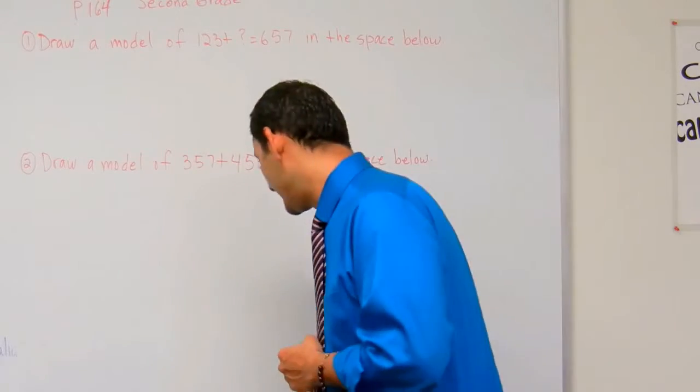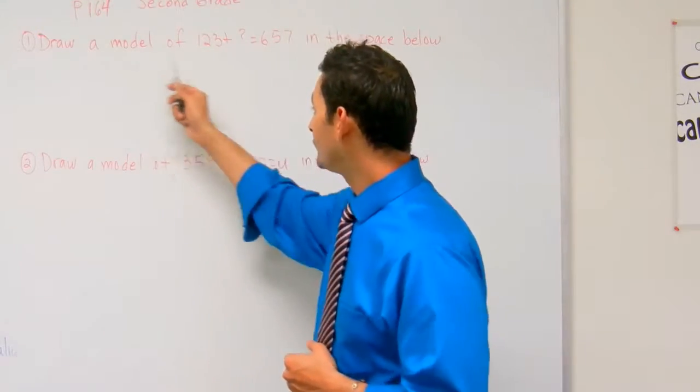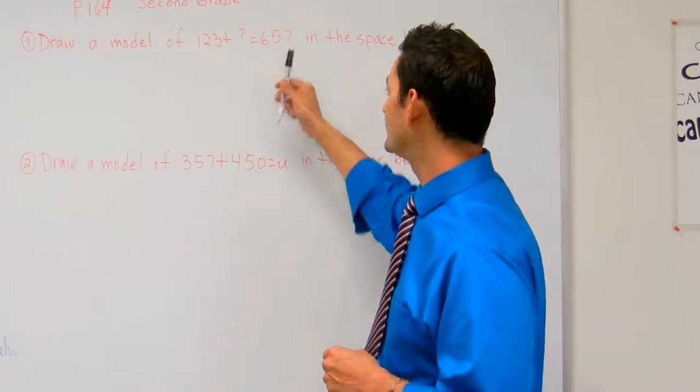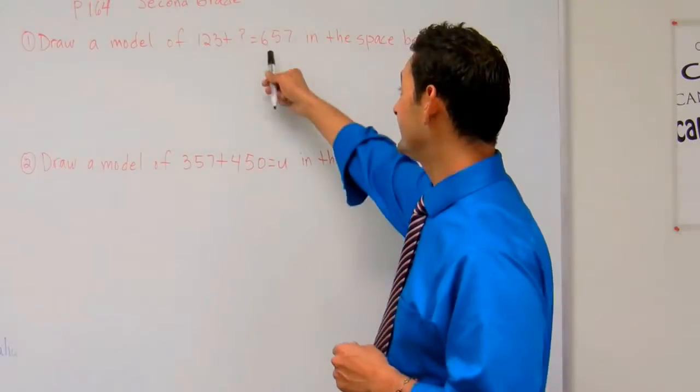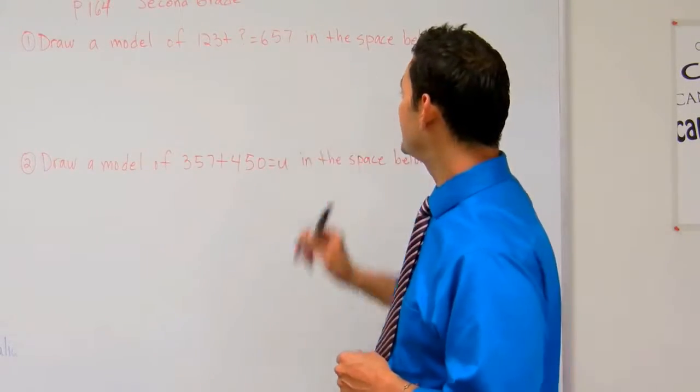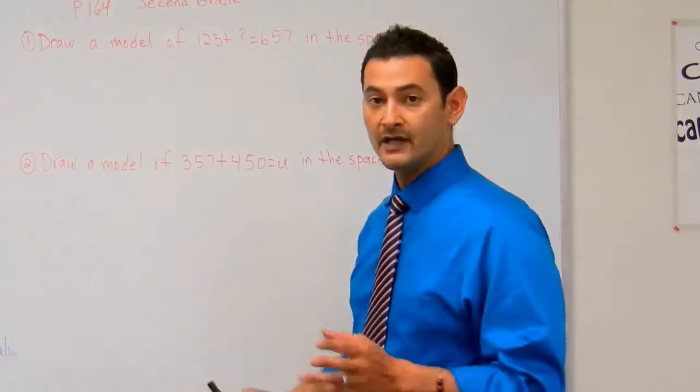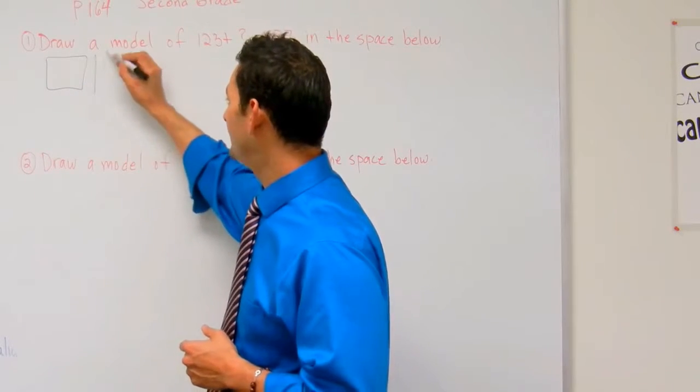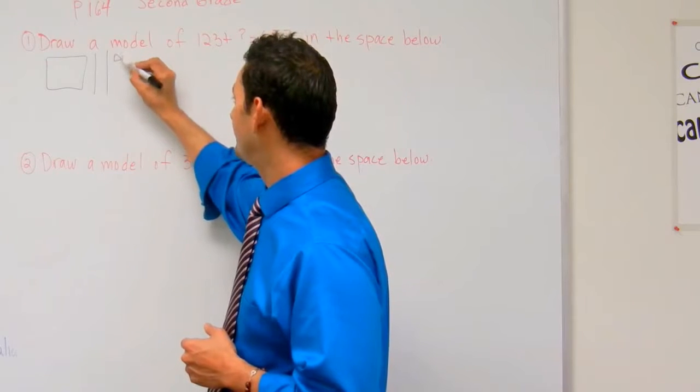Let's take a look at number one. Here we have draw a model of 123 plus something, the unknown number, equals 657 in the space below. So first let's start with 123. I'm going to draw the hundreds block, then two bundles of 10, then three ones.